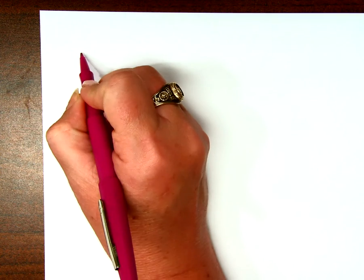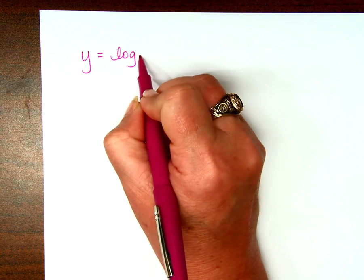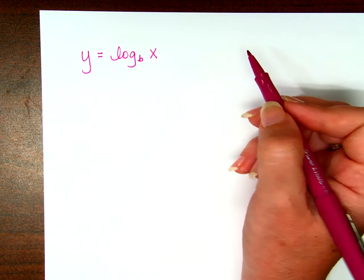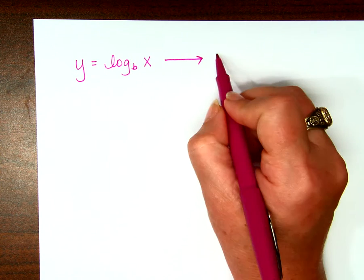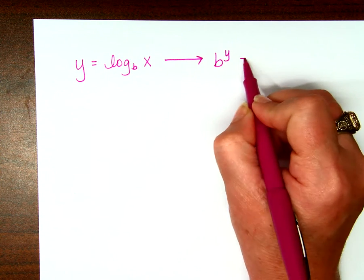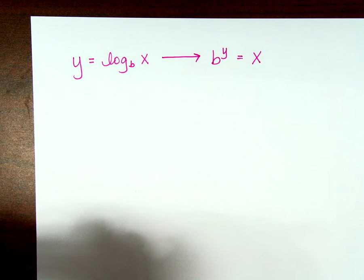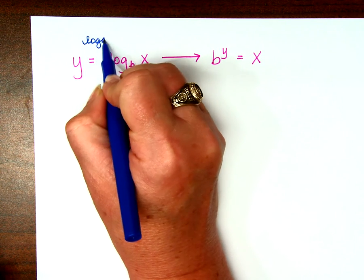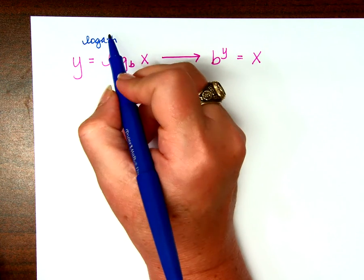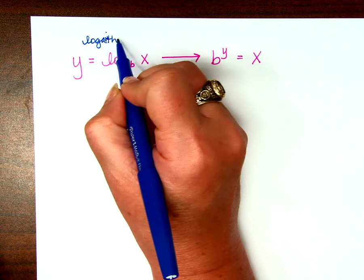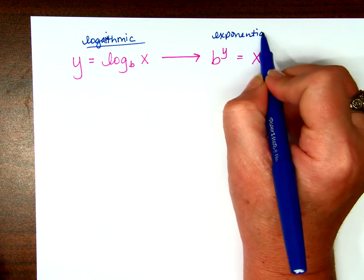Logarithmic to exponential. First of all, here's the basic rules. If it says y equals log base b of x, that's obviously logarithmic form because it says log in it. If we want to move it to exponential form, b to the y power equals x. So this is logarithmic form, and this is exponential.